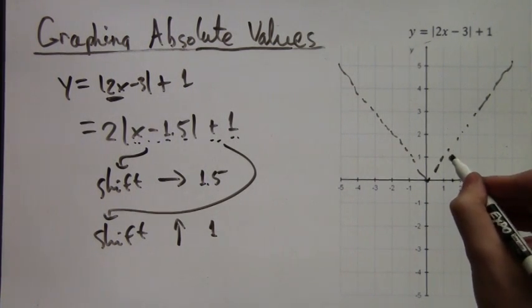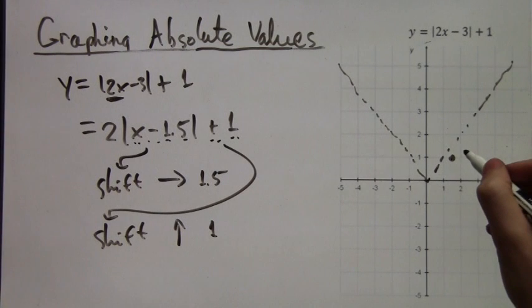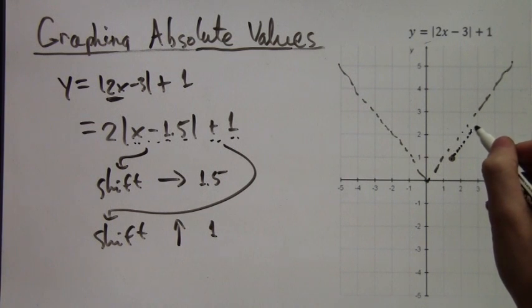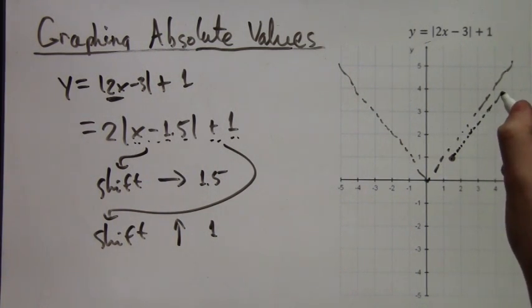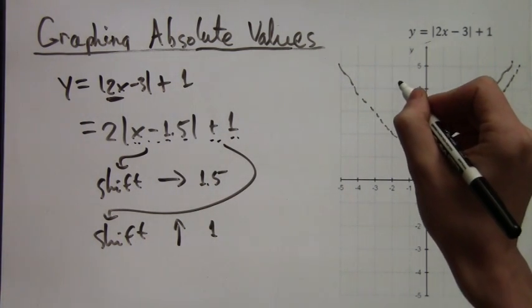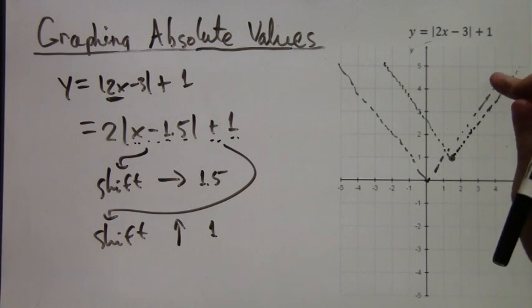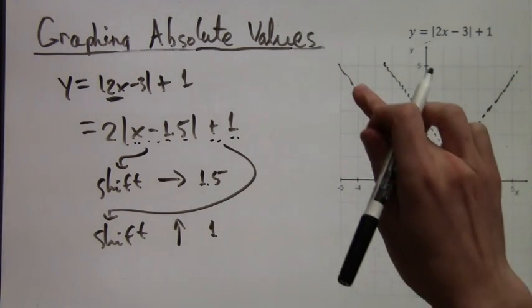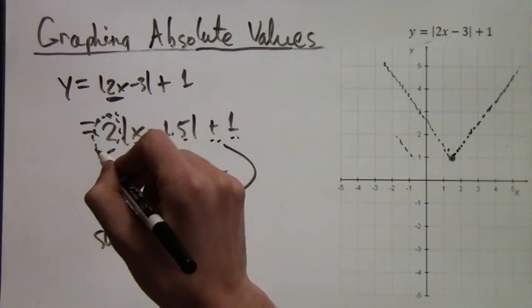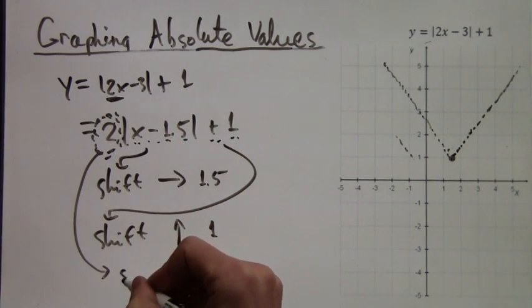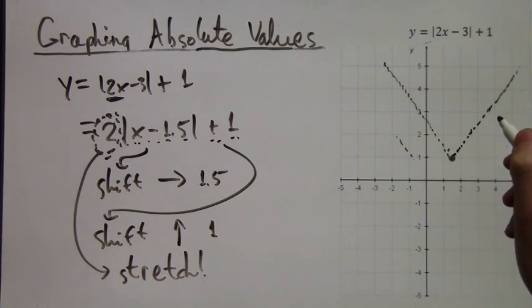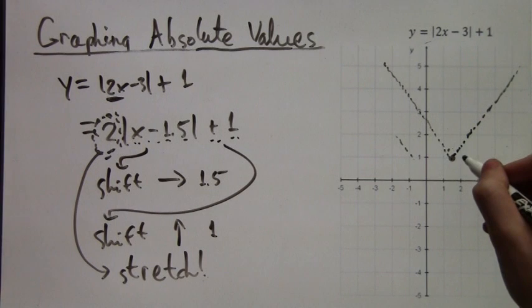We shifted 1.5 to the right, and then 1 up. And that's the new corner. So here we have the beginning of our drawing for y equals |2x minus 3| plus 1. But we're not quite done, because we also need to do the stretching factor of 2. So how does this work?